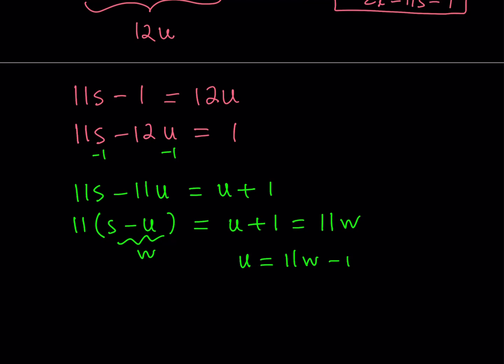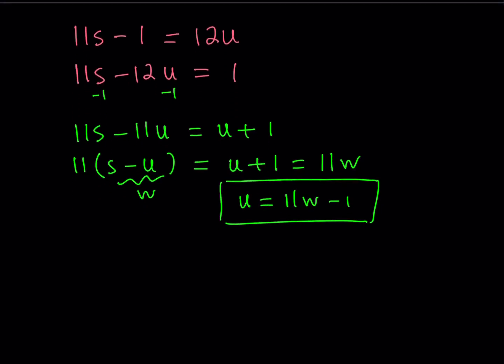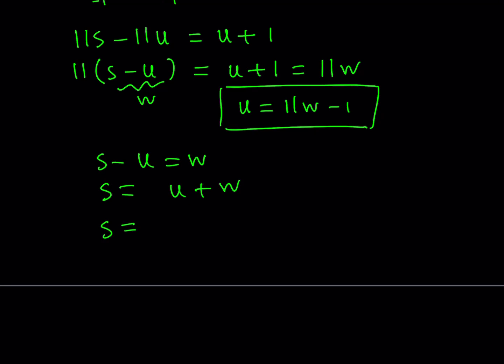And now, I got that u plus 1 is a multiple of 11. So that allows me to express u as 11w minus 1, which is kind of like a parametric solution. In other words, when the values of the w changes, the values of u are also going to be changing. So I got my solution for u. But also, remember that s minus u is equal to w. And we know that u is equal to 11w. In other words, s is equal to u plus w. So, I can now replace u with 11w minus 1 from here. And that should give me the value of s in terms of w. Because 11w plus w is 12w minus 1.